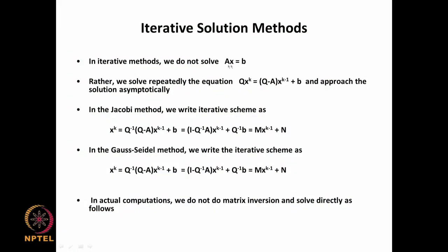We have been looking at basic iterative methods. In iterative methods, we do not solve A x equal to b directly; rather we solve repeatedly the equation Q x^k equal to Q minus A times x^(k-1) plus b, and approach the solution asymptotically.